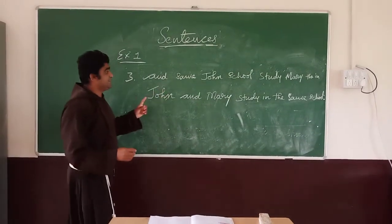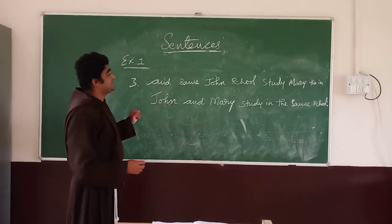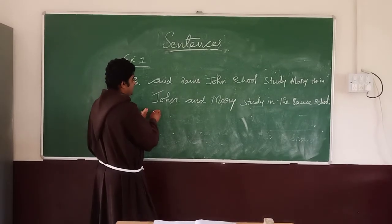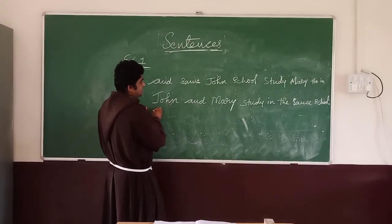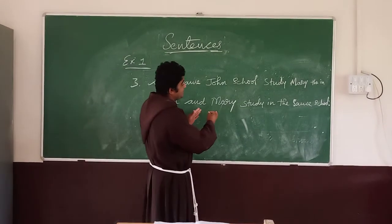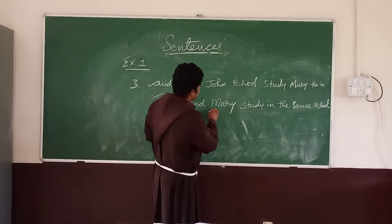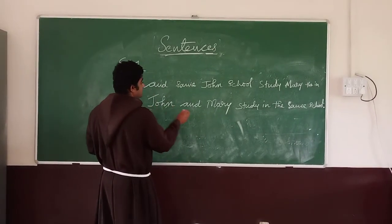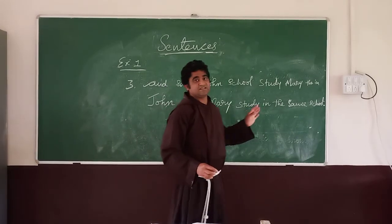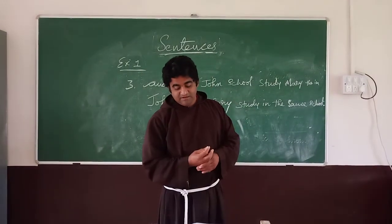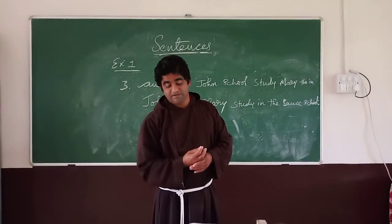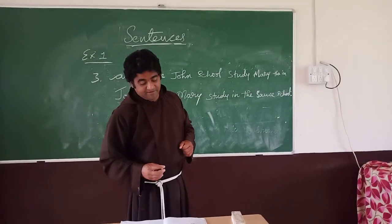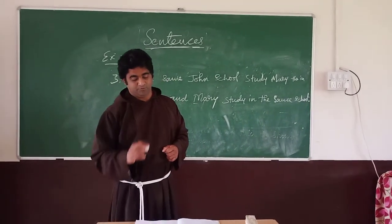All sentences end with a full stop, and the first letter must be capital. Since John is a proper noun, J is capital. Mary is also a proper noun, therefore Mary also starts with a capital. This is how the first exercise is done. The remaining exercises you will do as homework. Stand for me and I will give you the attendance. Thank you.